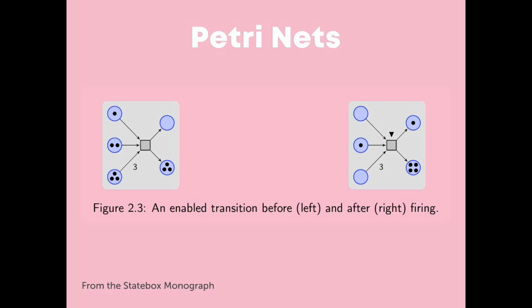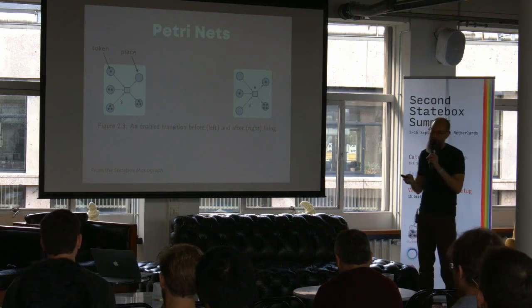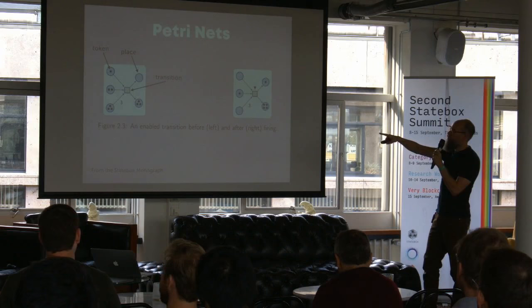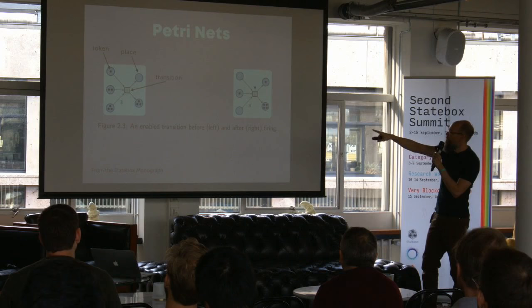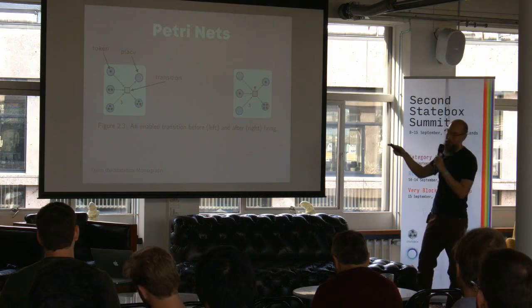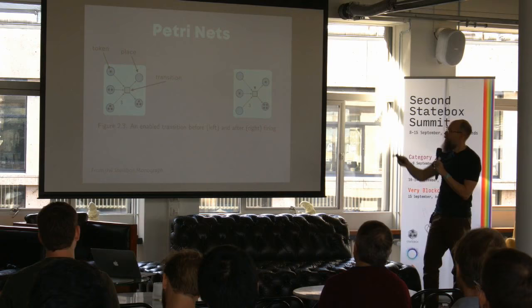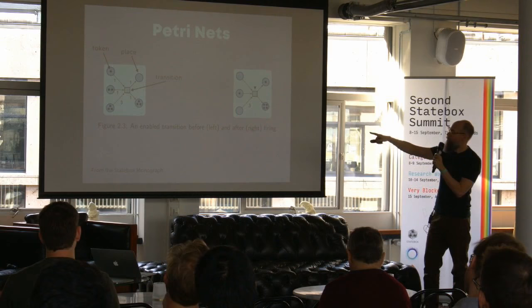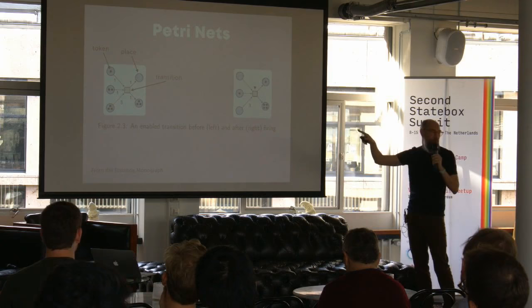Petri Nets are very much like a state machine, but more powerful. You've got this thing called the token — those are the little black dots. You've got a place, which is the circles — tokens go inside the places. You have the transition, which gets you from those places on the left to the diagram on the right. There's an upside-down triangle signifying that the transition has just fired and we've moved from one state to the next. And you have the arrows — when you see an arrow without a number, that's really just an arrow with a one.